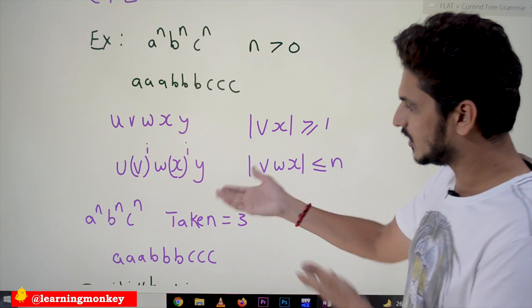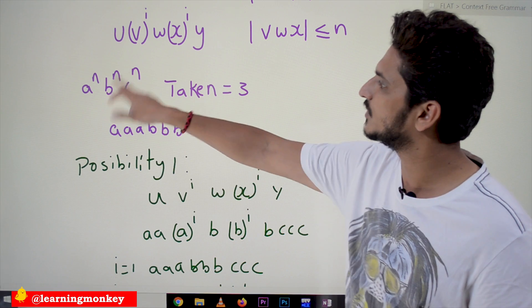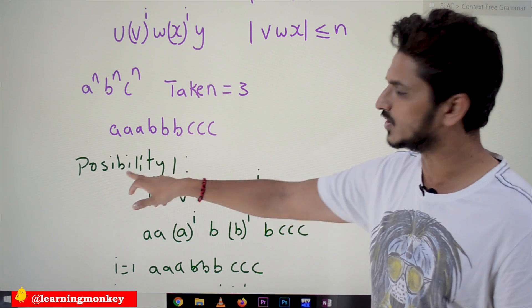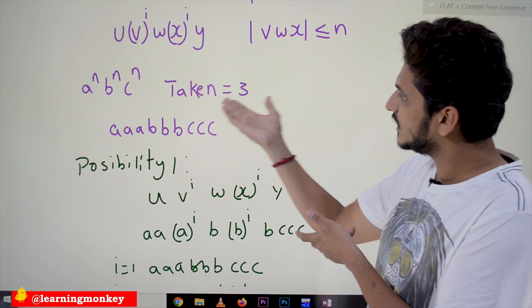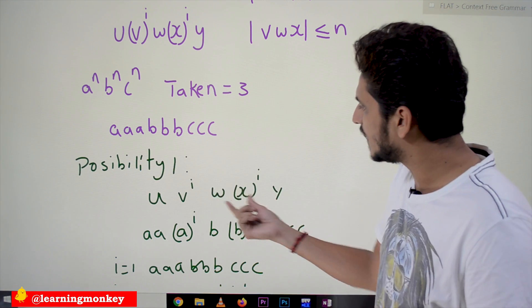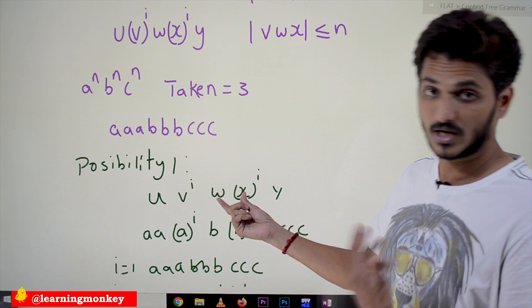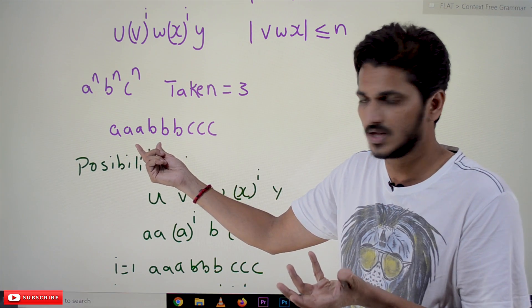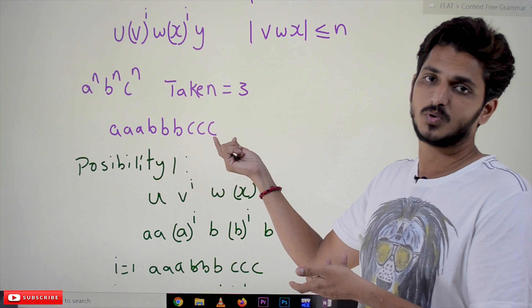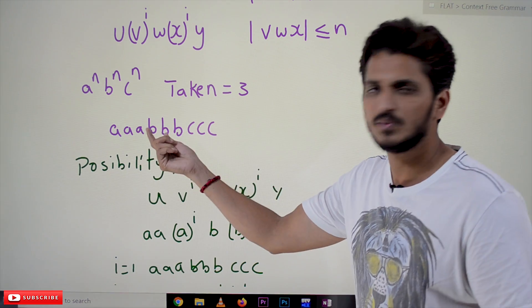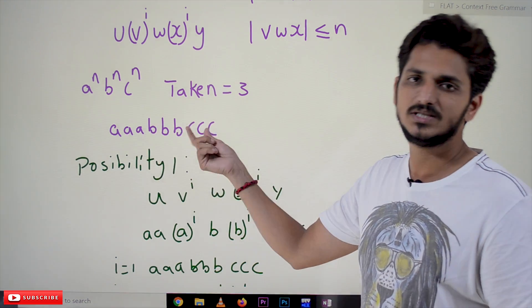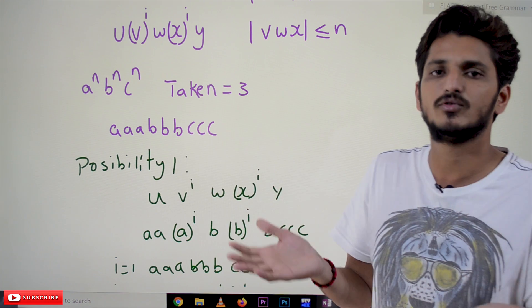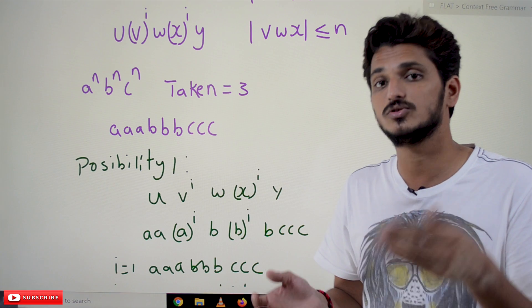Let's try to understand with an example. Take a^n b^n c^n with n=3. The input string is A A A B B B C C C. The middle part V W X can cover only the A's — giving only-A possibilities — or only B's, only C's, a combination of A and B, or a combination of B and C. All possibilities are reachable with this n value, which is enough to show the language is not context free.